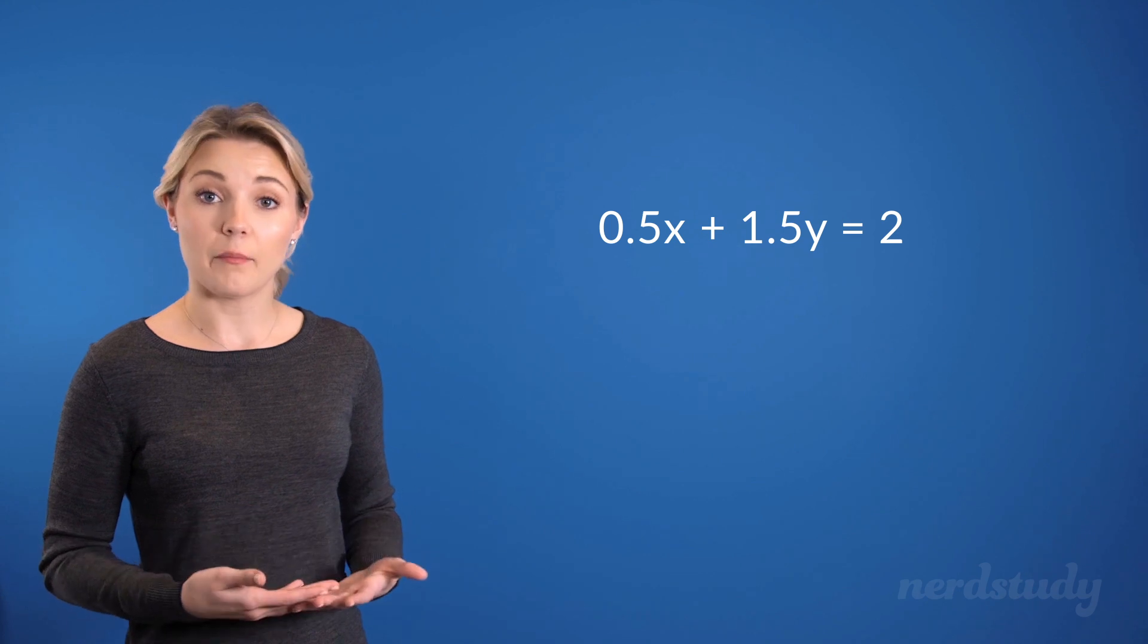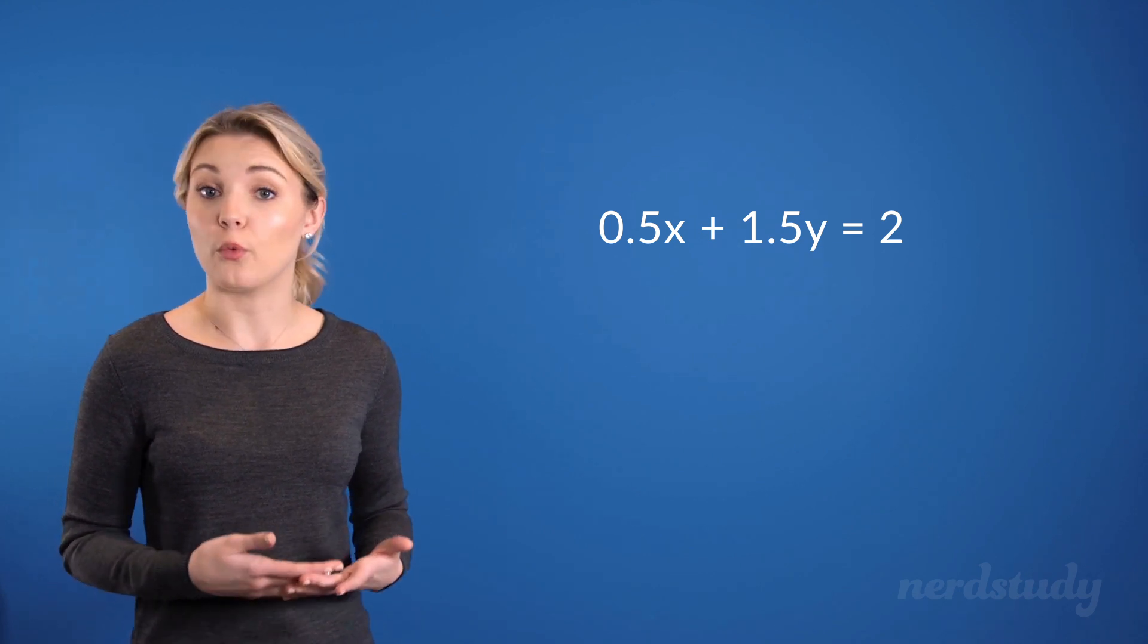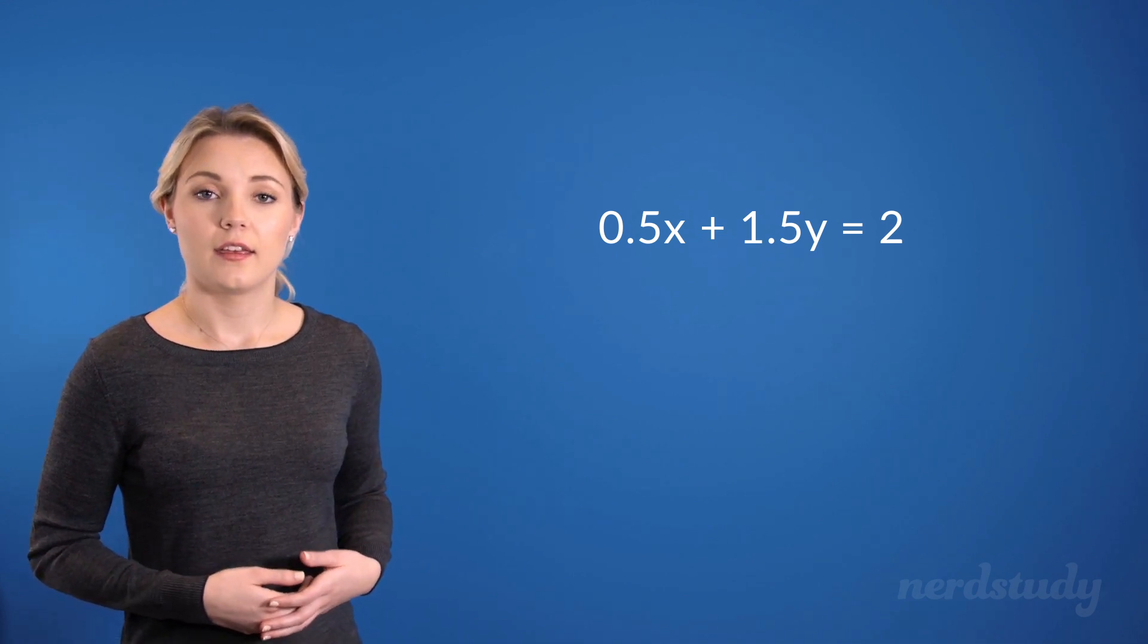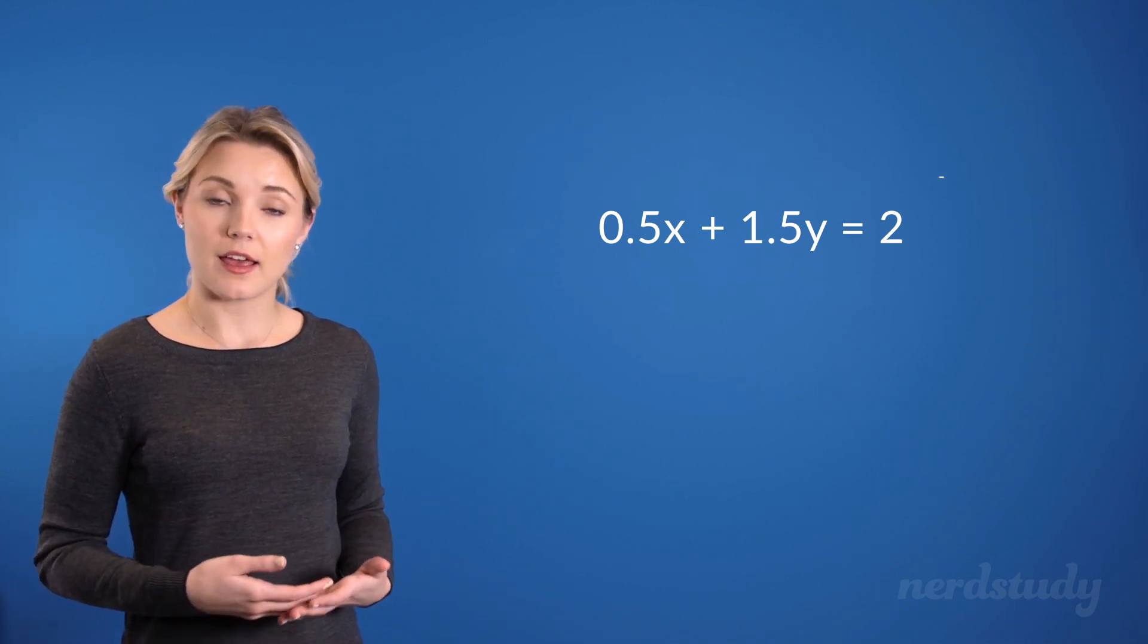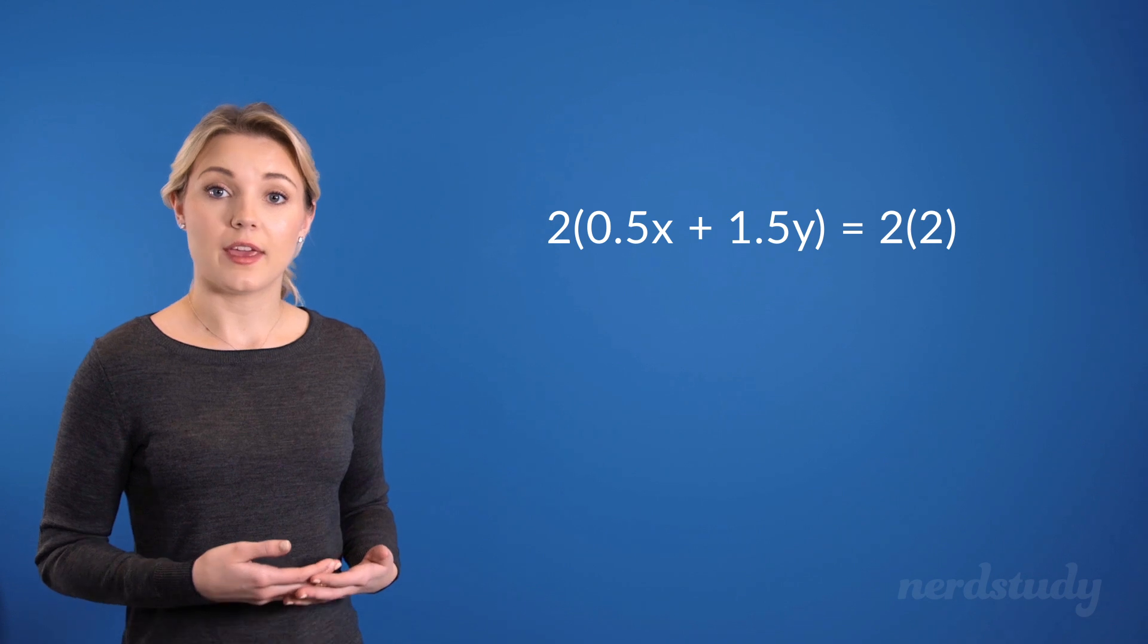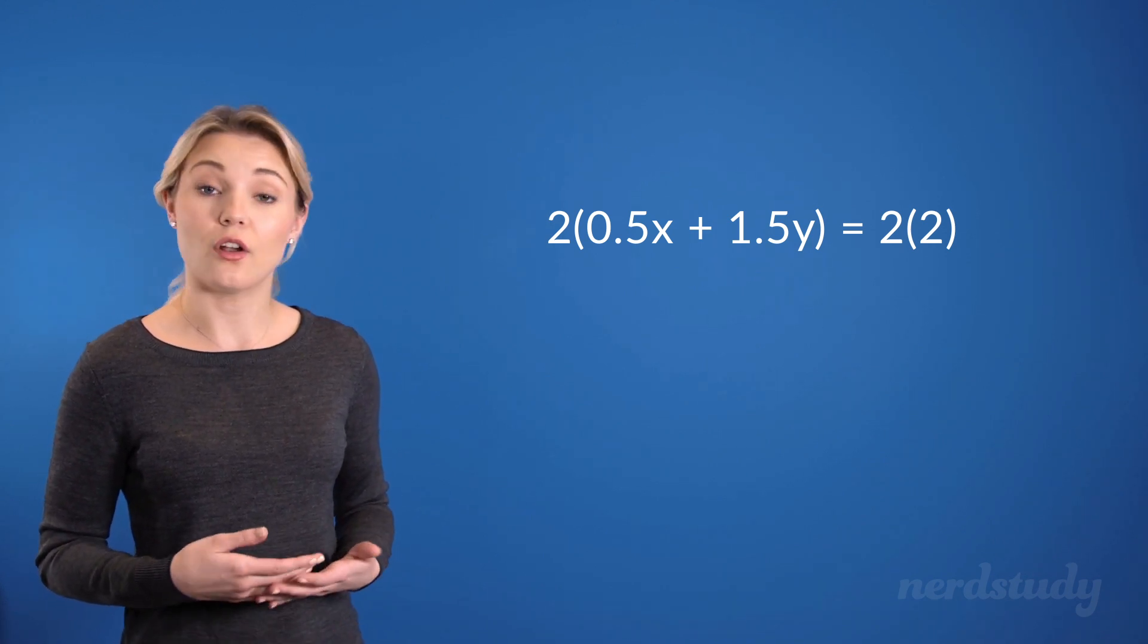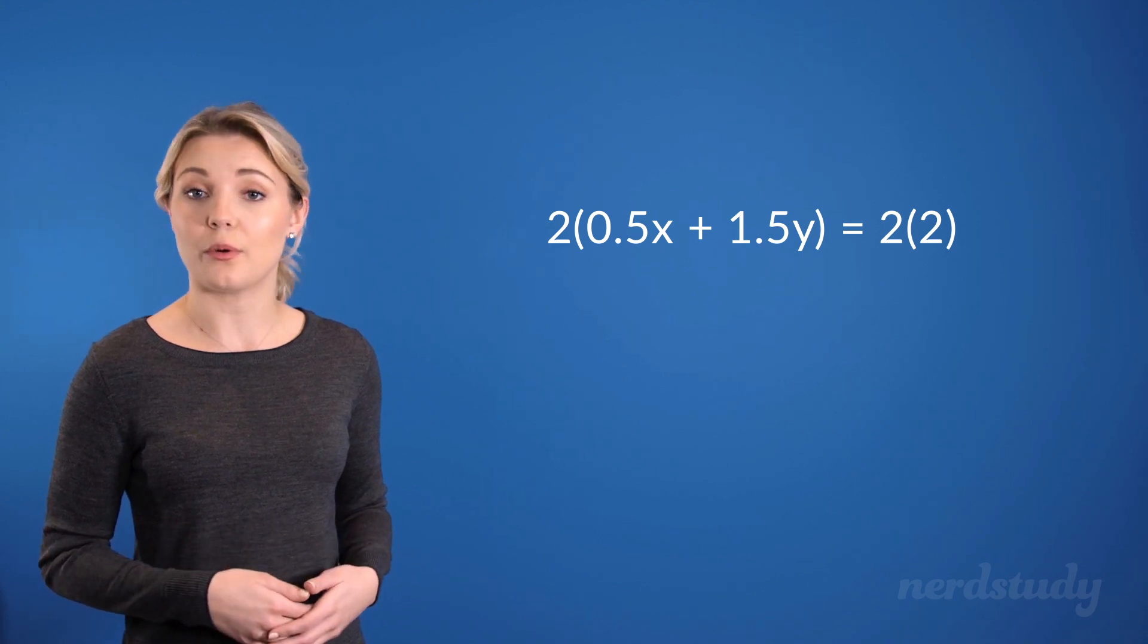Of course, since we are multiplying the entire equation by one number, the equation itself would not change at all. In this case, if we multiply the equation by 2, we can get a standard form linear equation without any decimals.